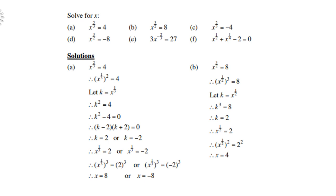B: x to the power of three over two equals eight. Break up three over two as a half to the power of three. Let k equal x to the power of one-half. Then k cubed equals eight, so k equals two (the cube root of eight is two). Reintroduce k back: x to the power of a half equals two. Multiply both exponents by two on both sides, giving x equals four.